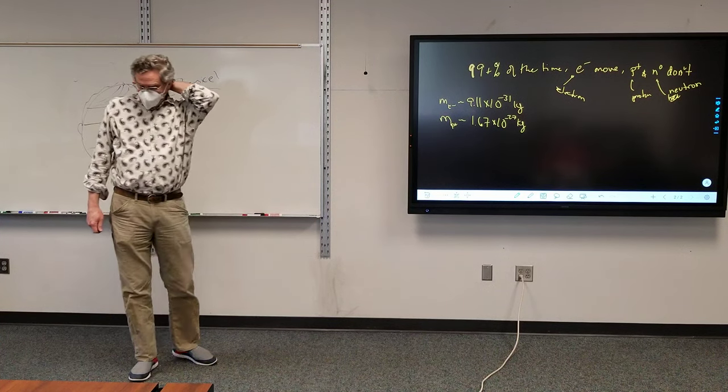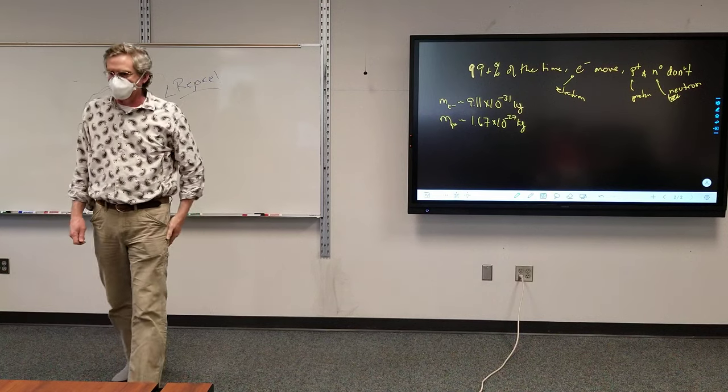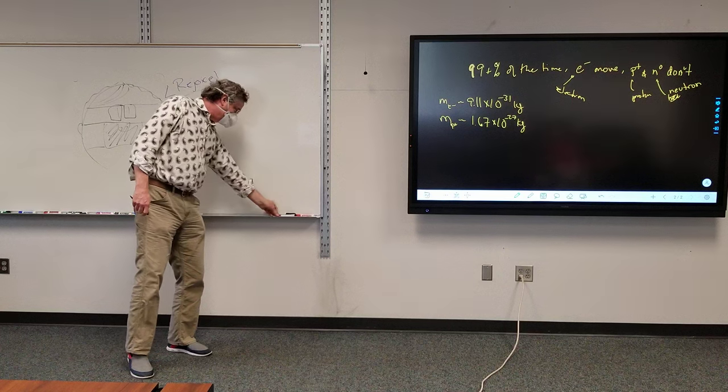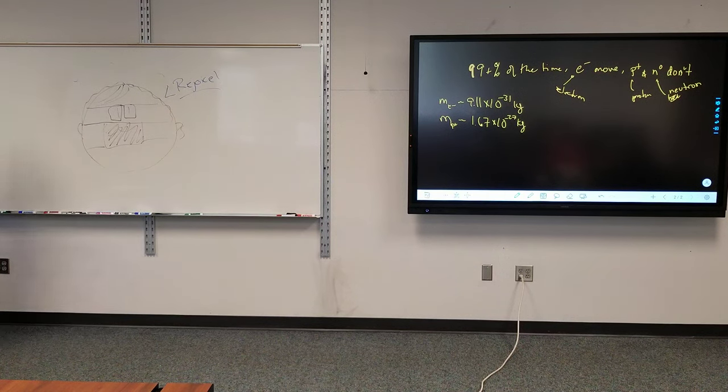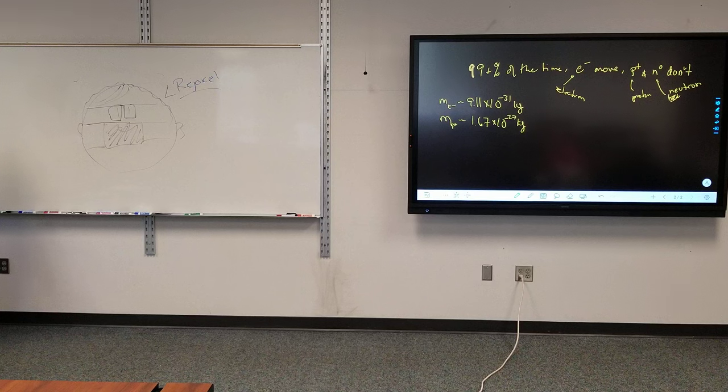So electrons are the ones most likely going to move. Now I can move protons and I'm about to move a proton in front of your very eyes, despite the difficulty of it. Here we go. Moving a proton. There we go. We've moved a whole bunch of protons and neutrons. So pretty much if you want to move protons and neutrons, you're moving the entire object.